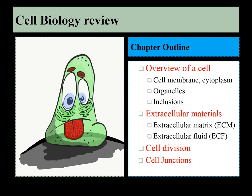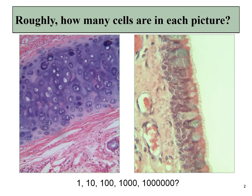This lecture is a brief review of the cell biology that you should have had in a prerequisite course that you will need to remember for this course on histology and embryology, aimed at students in dental hygiene. One of the things you will need to be able to do is look at images like these and spot the cells. Hopefully by the end of this lecture that will be easier, because you'll know about the parts that make up cells and the stuff found outside of cells.